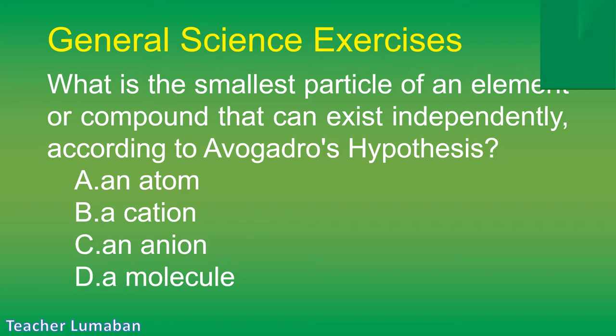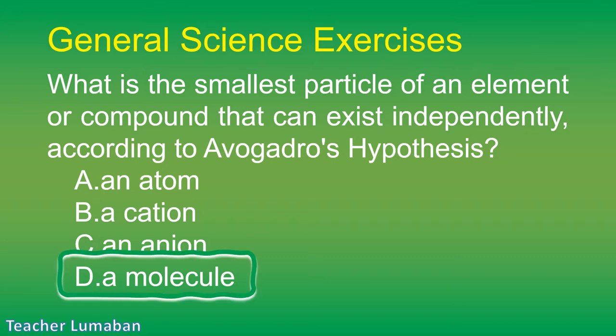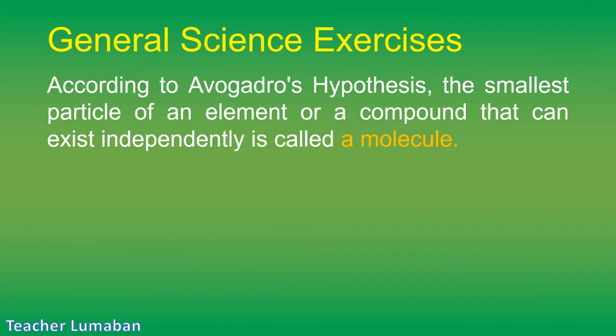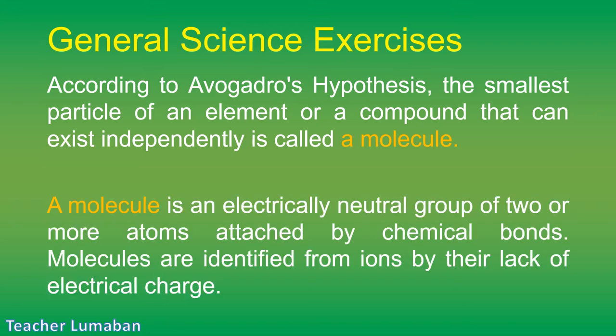The correct answer is Letter D: a molecule. According to Avogadro's hypothesis, the smallest particle of an element or compound that can exist independently is called a molecule. A molecule is an electrically neutral group of two or more atoms attached by chemical bonds. Molecules are distinguished from ions by their lack of electrical charge.